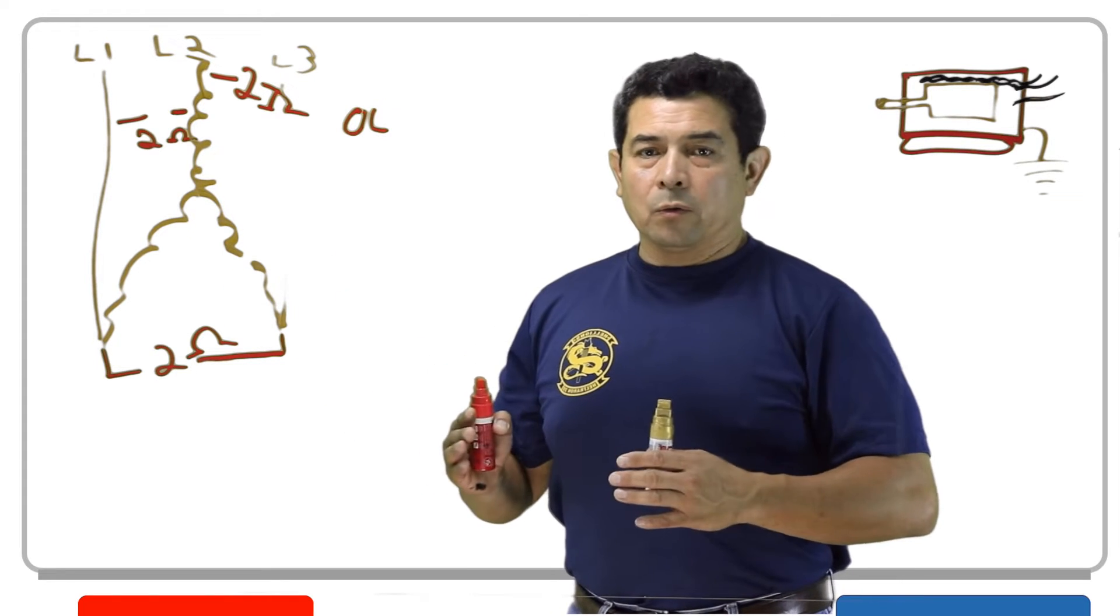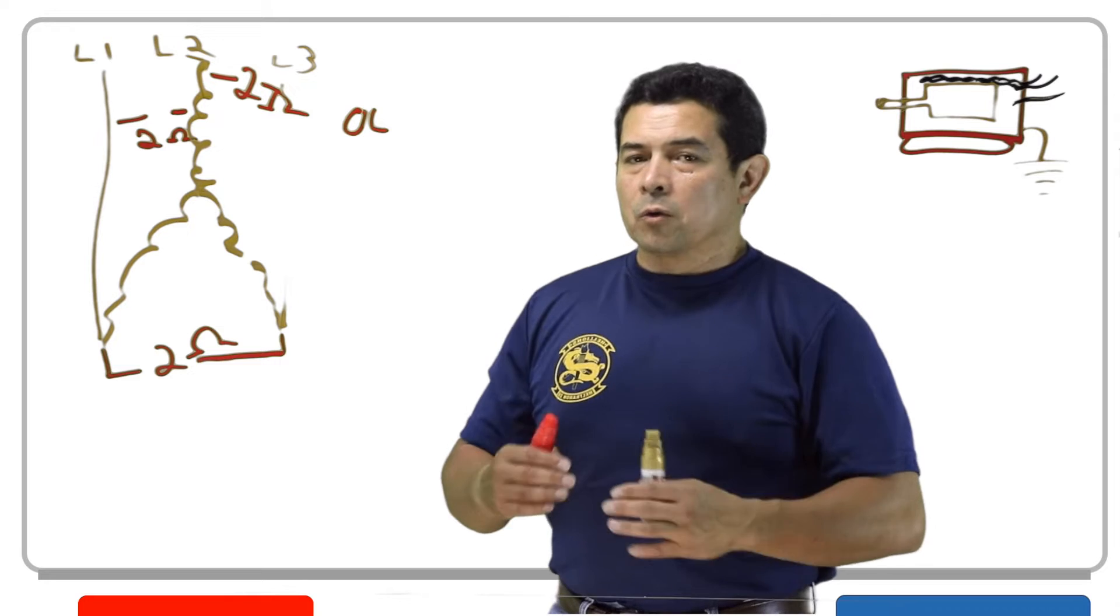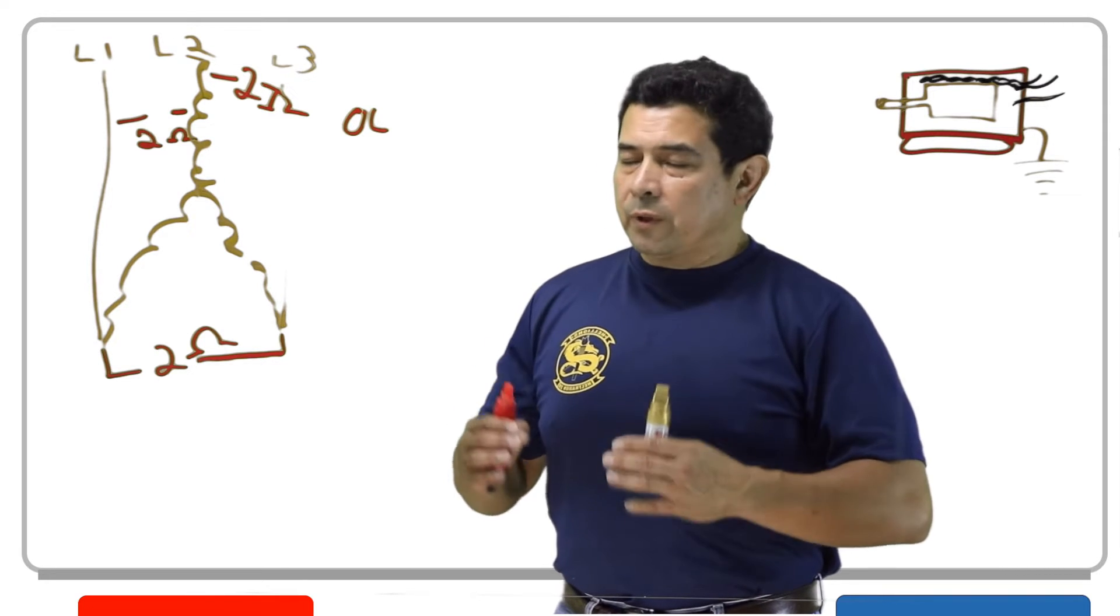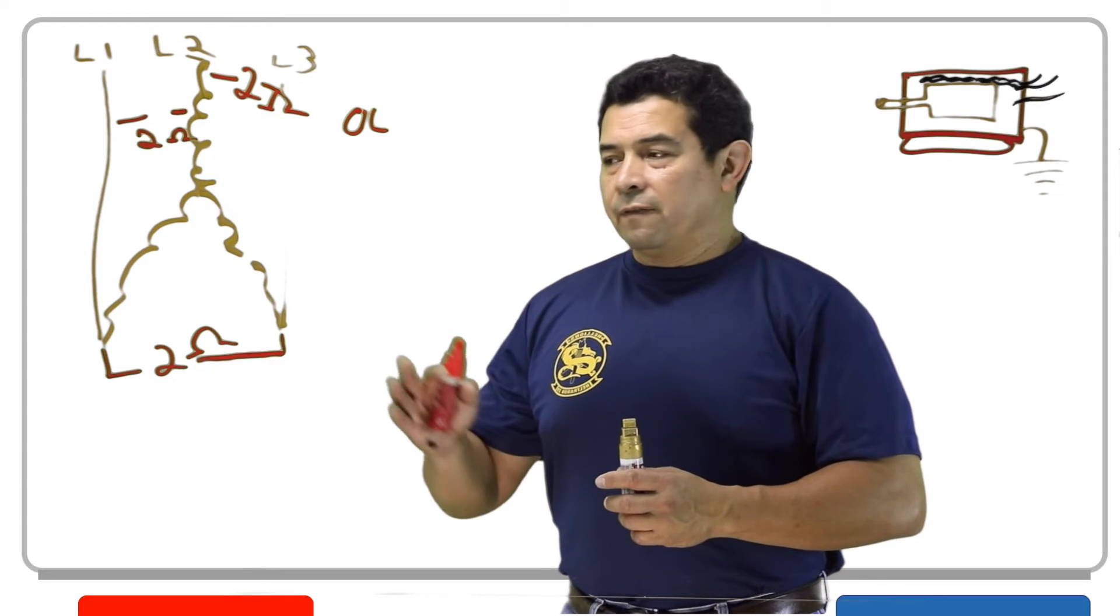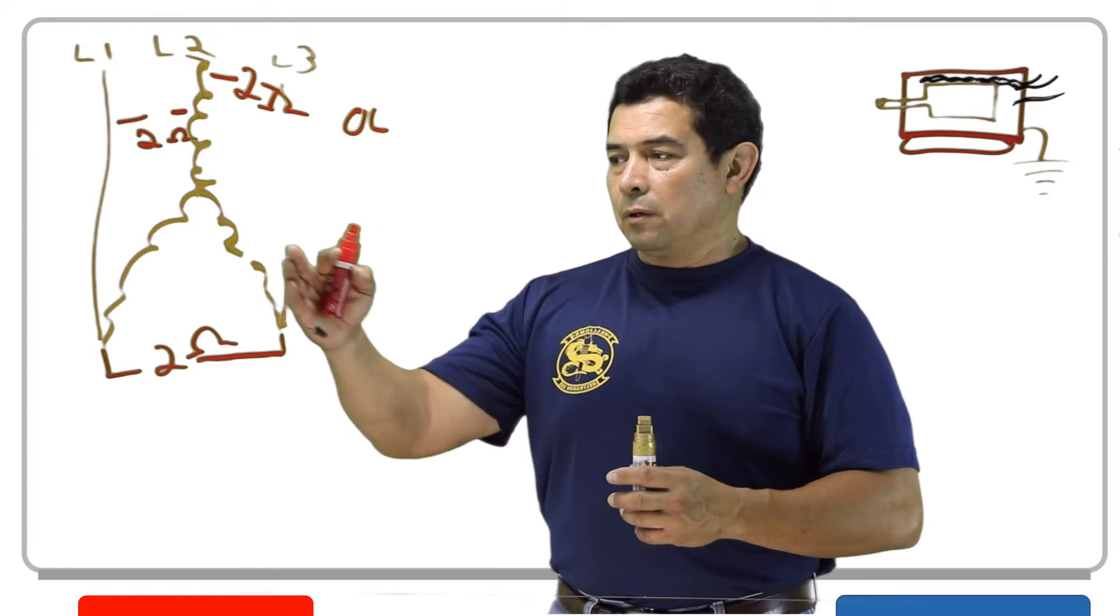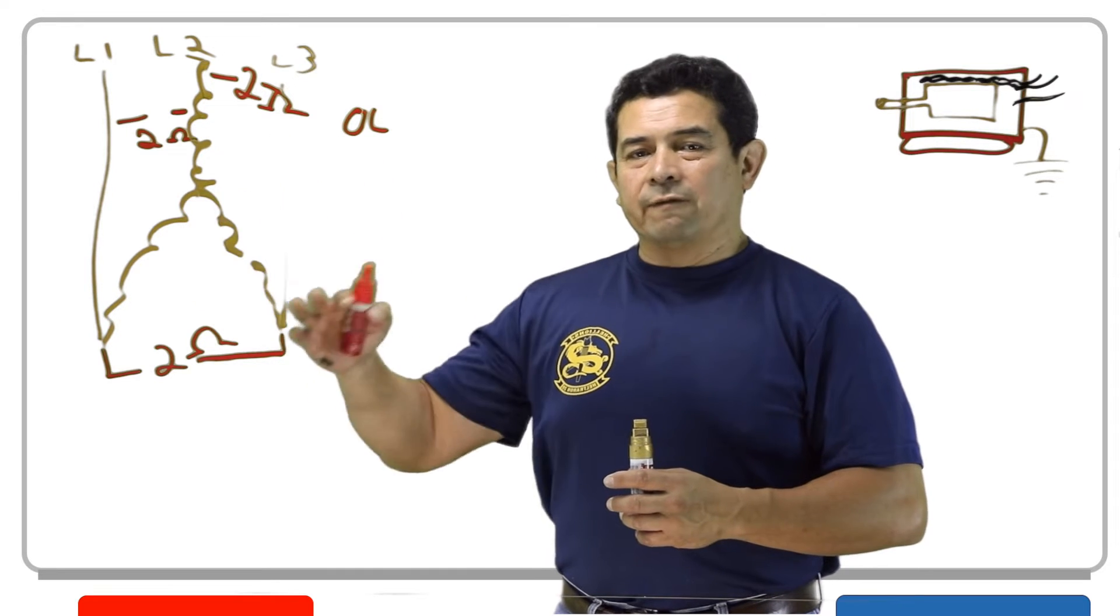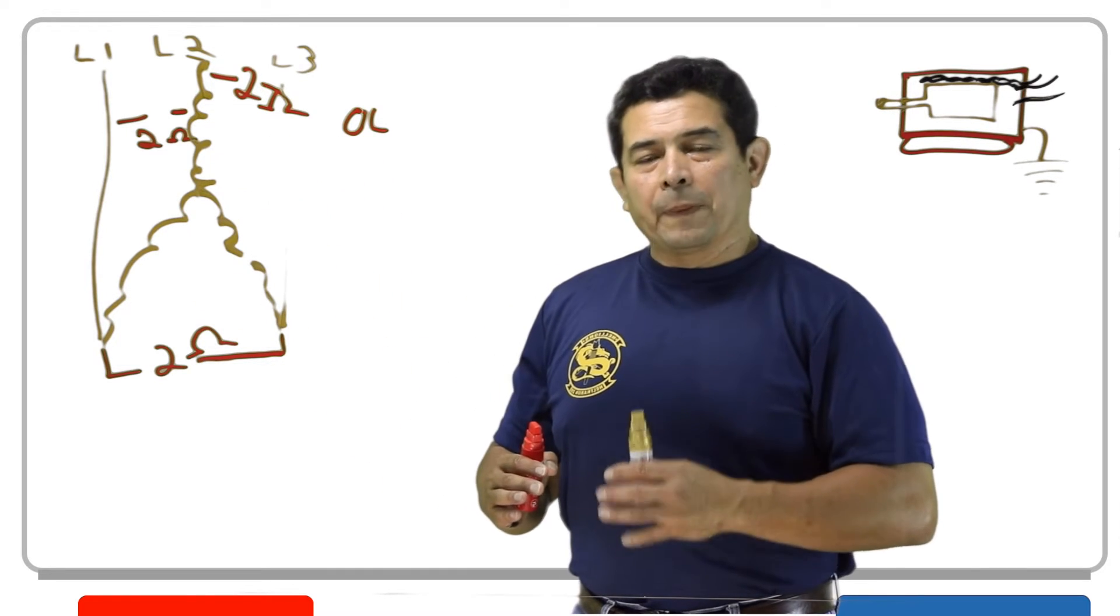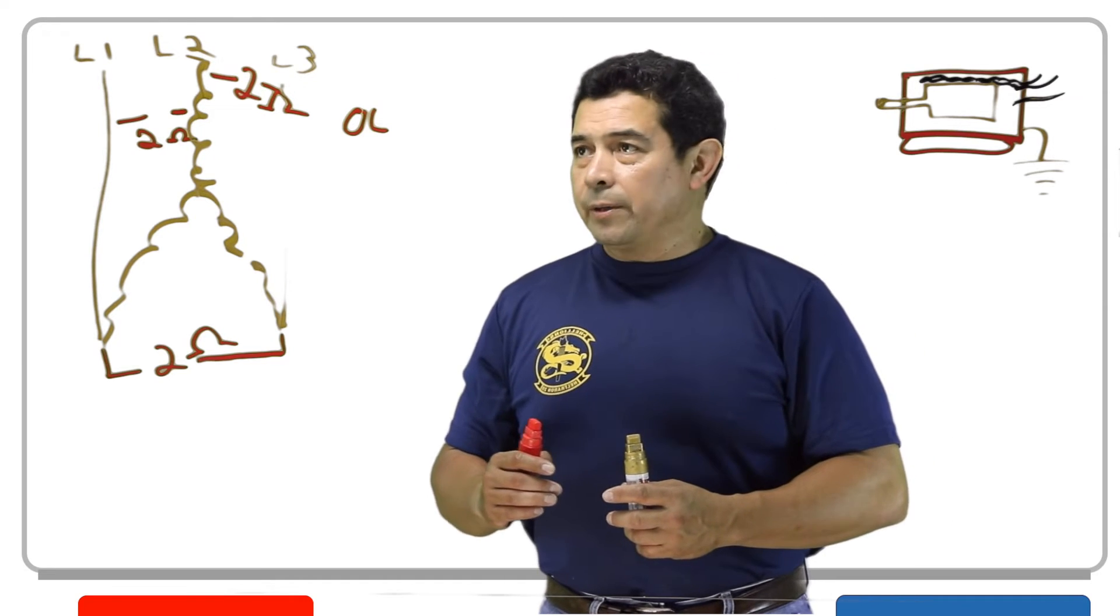If this was to open when the motor was running, then the motor would keep running. Your amperage would go up, but it would not start up again. It just would not start. If the motor's off, then it's not going to start, because that is open. The magnetic field cannot travel around there. I will explain more of that in a separate video.